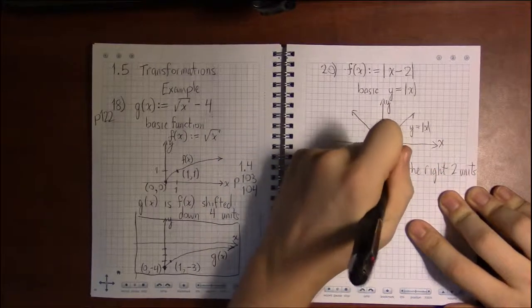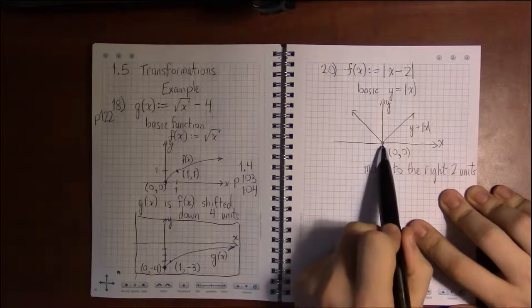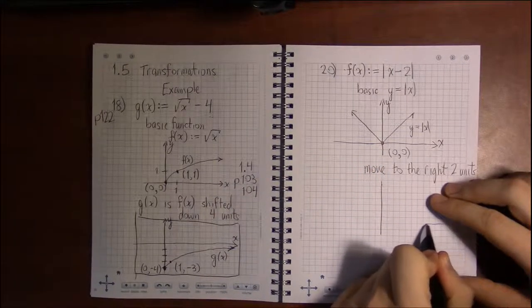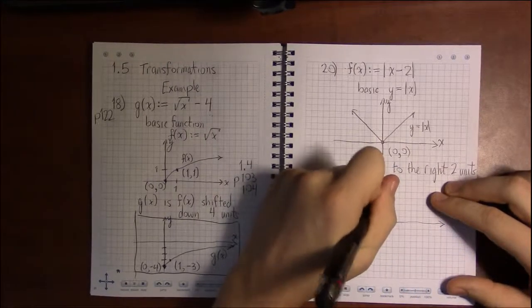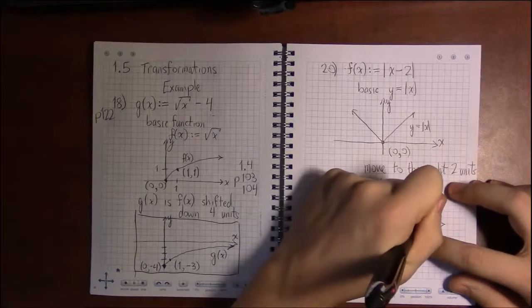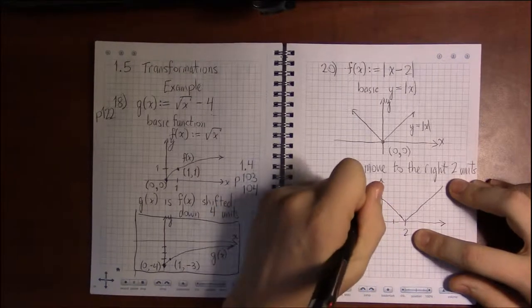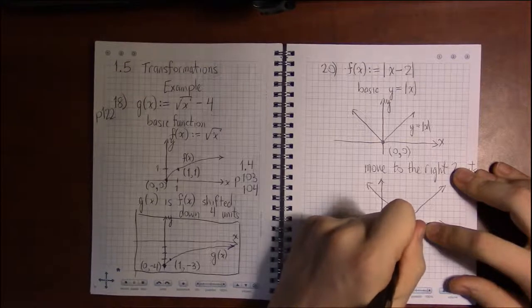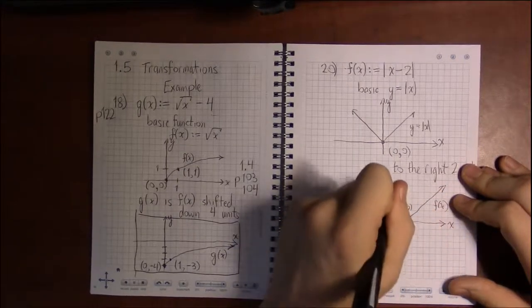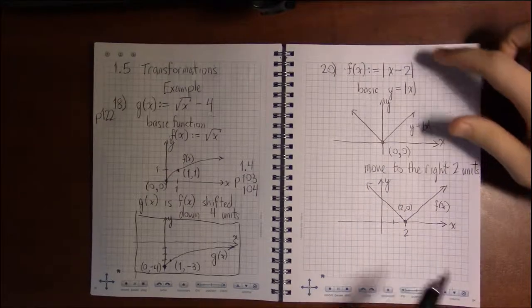We're going to move this graph to the right by two units. This passes through the point 0, 0. So this corner on the v is going to move 2 to the right, 1, 2. This is where the corner will sit at 2, 0. And this is the graph of f of x. So f of x is just the absolute value of x, but shifted right 2.